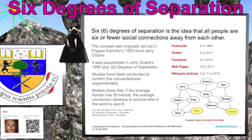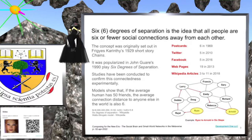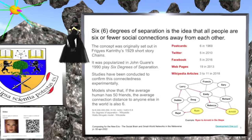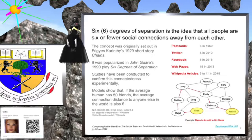Six degrees of separation is the idea that all people are six or fewer social connections away from each other. The concept was originally set out in the 1929 short story Chains by Hungarian author Frigyes Karinthy. It was popularized in the 1990 play Six Degrees of Separation by American playwright John Guare.